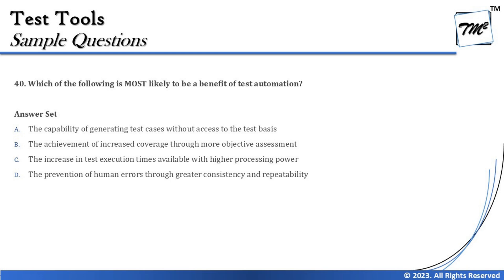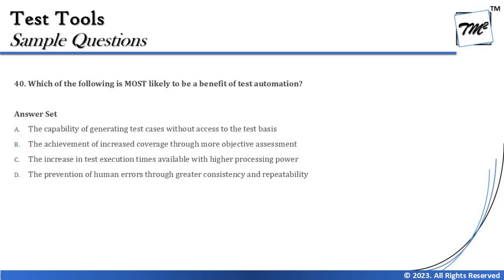Option C says: the increase in test execution times available with higher processing power. Higher processing power should actually help you reduce execution time, and that is indeed a benefit of automation testing. However, the word 'increase' in 'increase in test execution times' makes the entire statement incorrect, because automation reduces execution time, not increases it. So option C is ruled out.